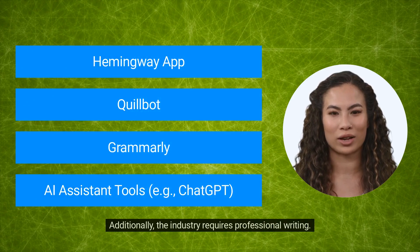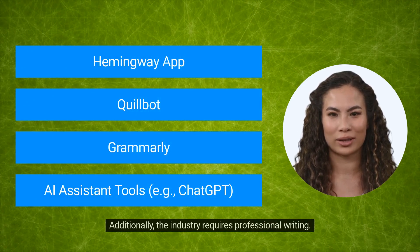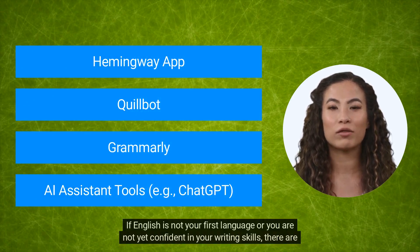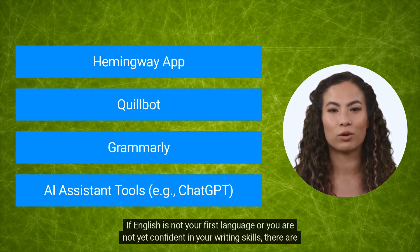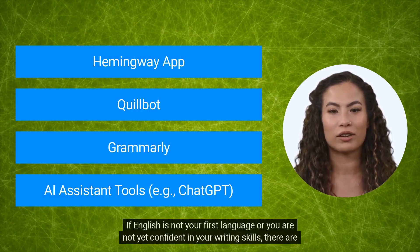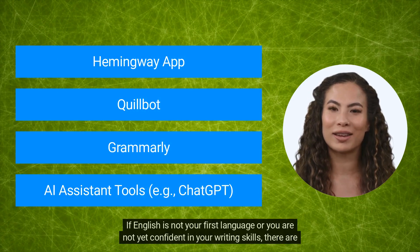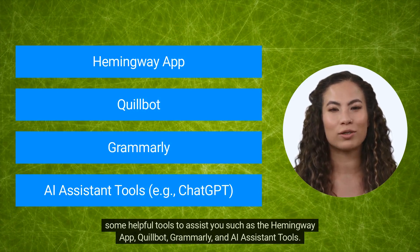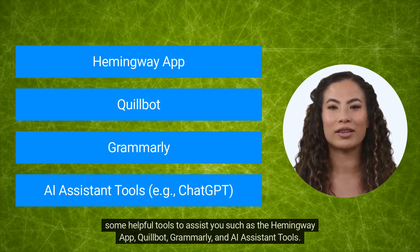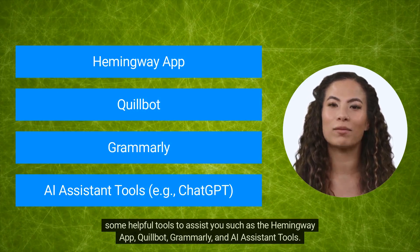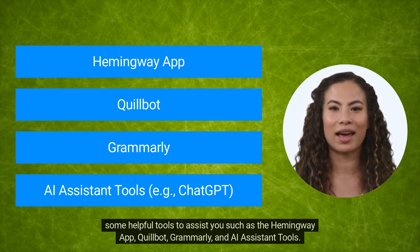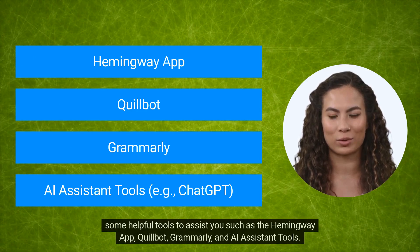The industry requires professional writing. If English is not your first language or you are not yet confident in your writing skills, there are some helpful tools to assist you, such as the Hemingway app, Quillbot, Grammarly, and AI assistant tools.